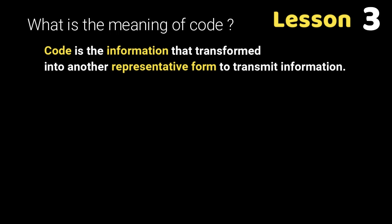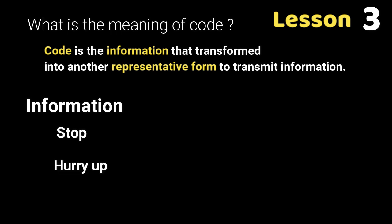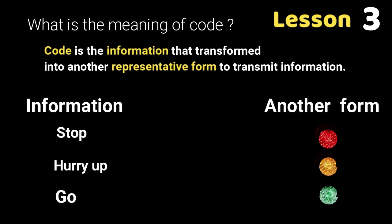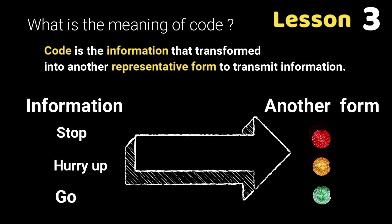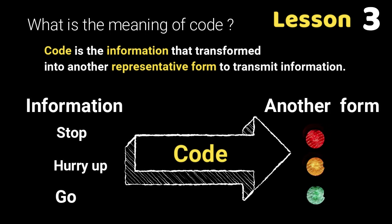The code of the traffic light: we transform the information of the words stop, hurry up, and go into another form of information, which is the light color — red, yellow, green.